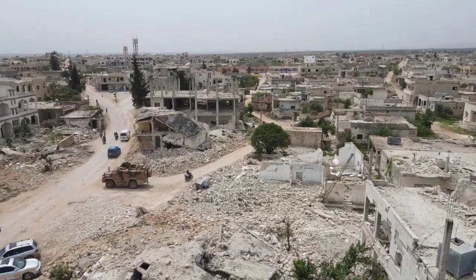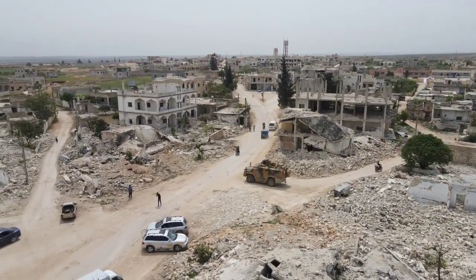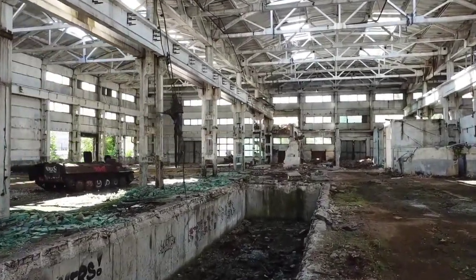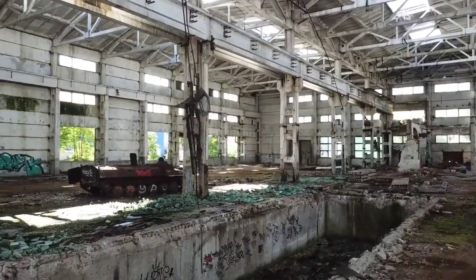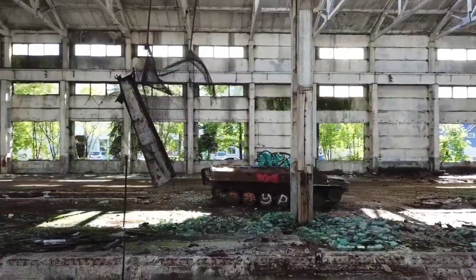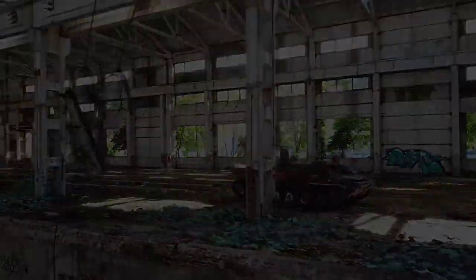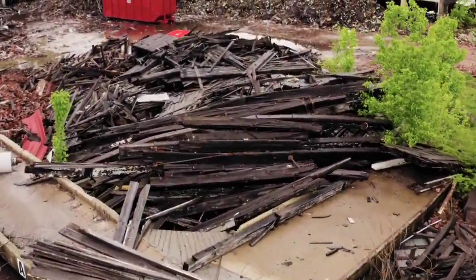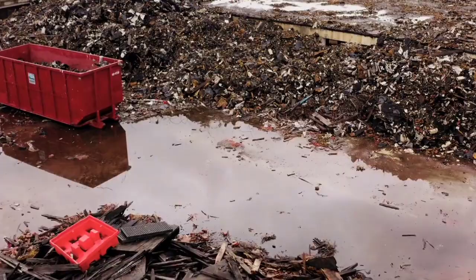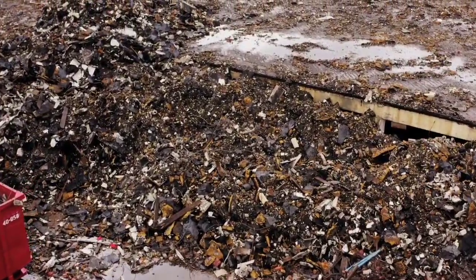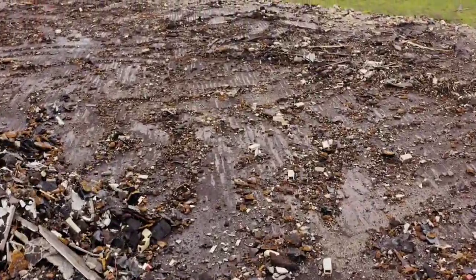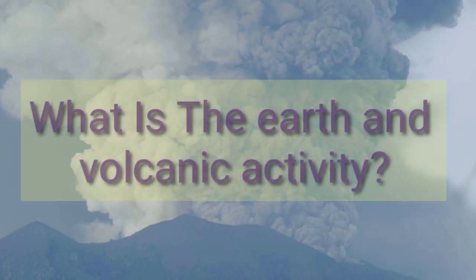This continues until the stress has risen sufficiently to break through the asperity, suddenly allowing sliding over the locked portion of the fault and releasing the stored energy as radiated elastic strain seismic waves, frictional heating of the fault surface, and cracking of the rock. This process of gradual build-up of strain and stress punctuated by occasional sudden earthquake failure is referred to as the elastic rebound theory. It is estimated that only 10 percent or less of an earthquake's total energy is radiated as seismic energy; most is used to power fracture growth or converted into heat generated by friction.